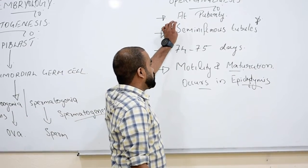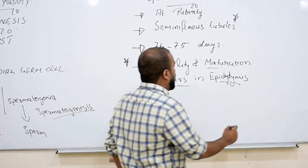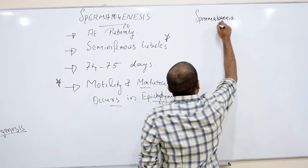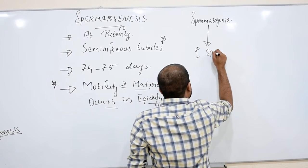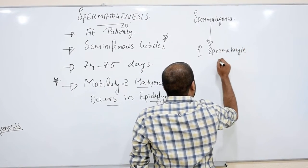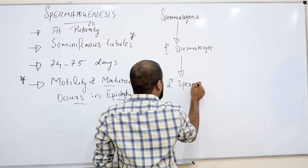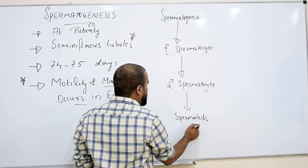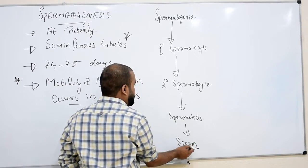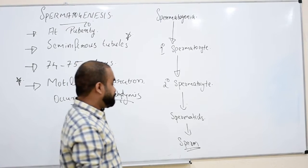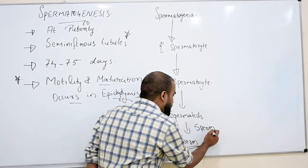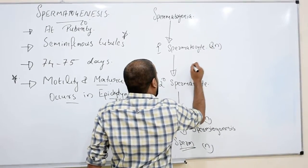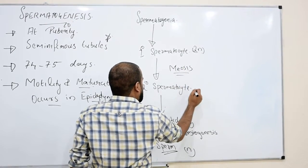Now let's see how spermatogenesis takes place. Starting from spermatogonia, by mitosis they produce primary spermatocytes. Primary spermatocytes produce secondary spermatocytes, which then produce spermatids, resulting in sperm. The process of forming sperm is called spermiogenesis. Sperm are haploid. The cell starts as diploid, then undergoes meiosis and becomes haploid.